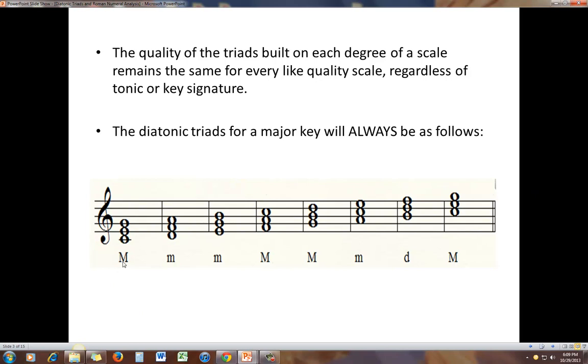But the pattern that results will be the same for every major scale. So here is the pattern: The tonic is major, supertonic is minor, mediant is minor, subdominant is major, dominant is major, submediant is minor, leading tone is diminished, and then we're back home to the major tonic.